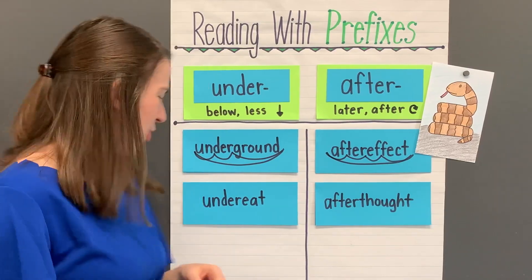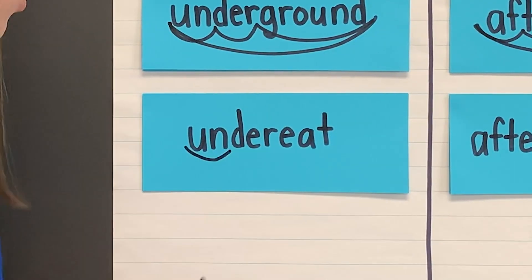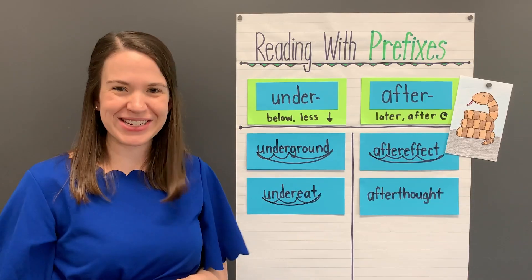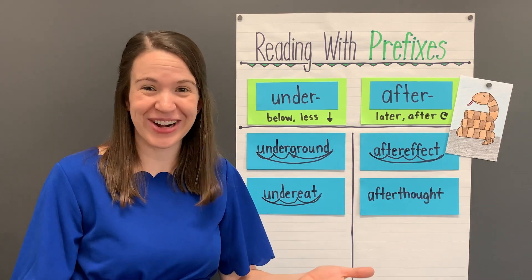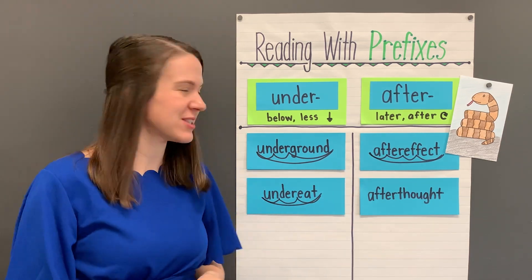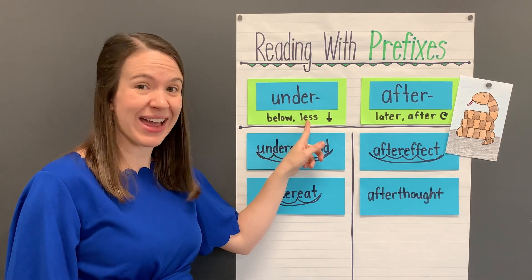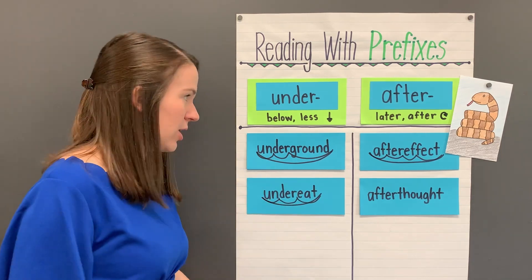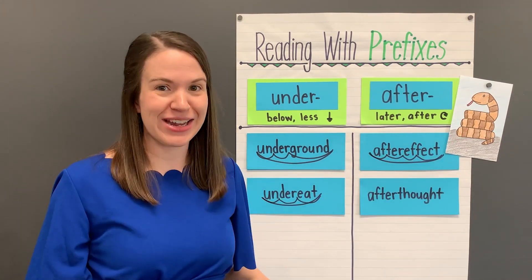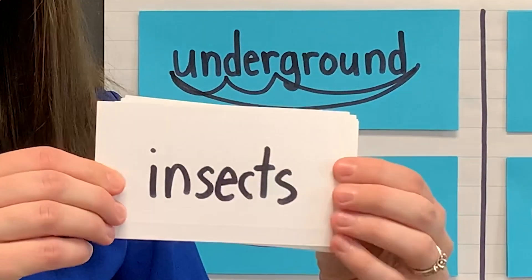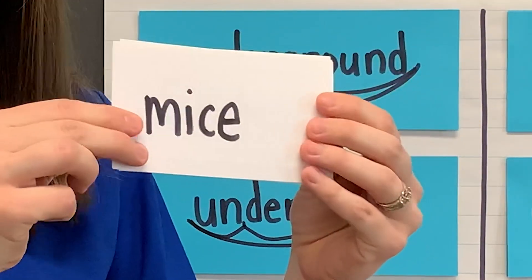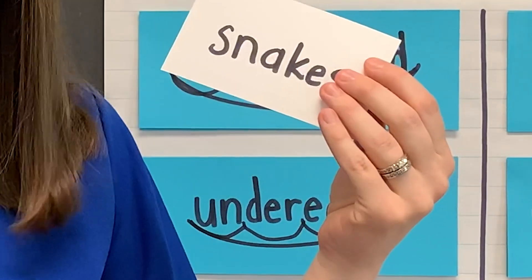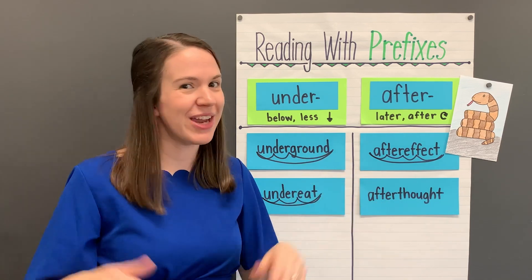Let's try another word. Read with me. Under-eat. This word is under-eat. Let's think about what it means using the prefix. Under can mean below or less, so under-eat means to eat less than you should. Northern water snakes do not under-eat. They will eat insects and birds and mice and fish and frogs and leeches and turtles and even other snakes and more. They do not under-eat.